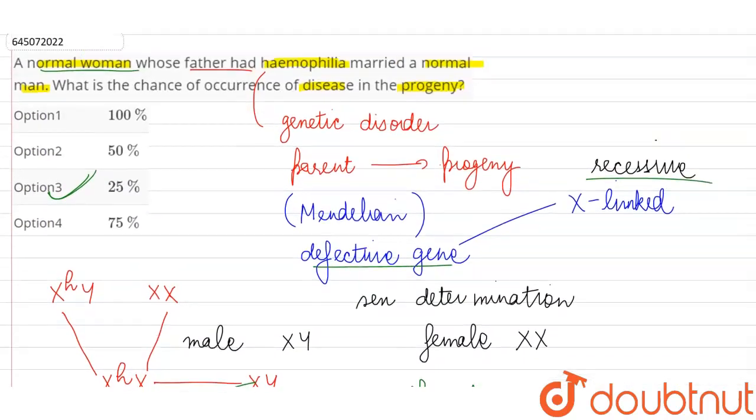Out of the four possible genotypes, two are carrying the defective gene but only the male child will be affected. Female will remain an unaffected carrier because it is a sex-linked recessive disorder. So option C is our correct answer.